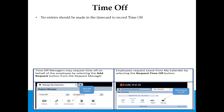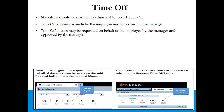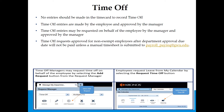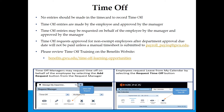No entry should be made in the time card to record time off. Time off entries are made by the employee and approved by the manager. Time off entries may be requested on behalf of the employee by the manager and approved by the manager. Time off requests approved for non-exempt employees after the department approval due date will not be paid unless a manual timesheet is submitted to payroll_payrec@gw.edu. Please review time off training on the Benefits website at benefits.gwu.edu.